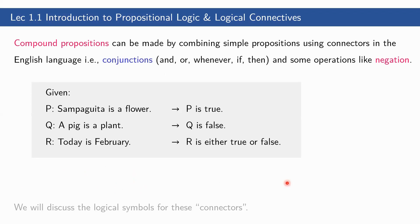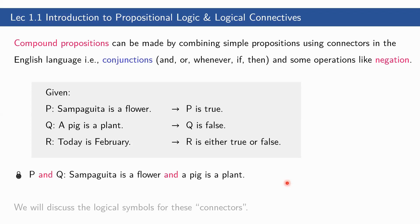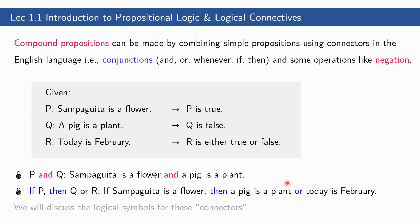Just like in the English language, we also have compound propositions. Compound propositions can be made by combining simple propositions using connectors — that is, conjunctions and some operators like negation. Using the three propositions P, Q, and R, we can form compound sentences. For example, 'P and Q': Sampagita is a flower and a pig is a plant. Or 'if P then Q or R': If Sampagita is a flower, then a pig is a plant or today is February. We shall discuss the following connectors in the next slide.